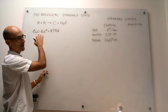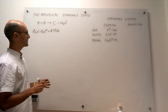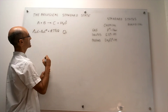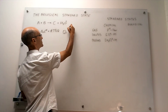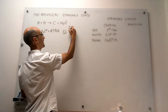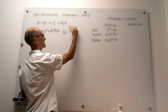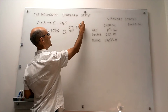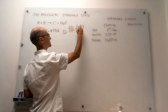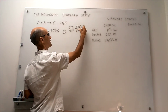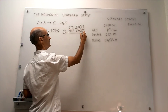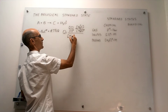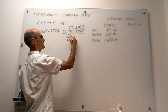For a reaction like A plus B to give C plus protons, we could simply write that reaction quotient as the concentration of C over the concentration of C at the standard state, times the concentration of protons over the concentration of protons at the standard state, and then divide over the concentrations of reagents and their reference concentrations at the standard state.